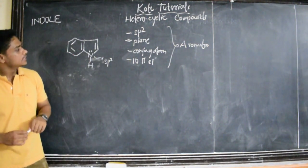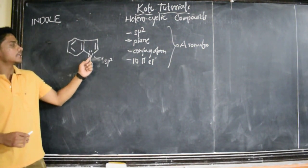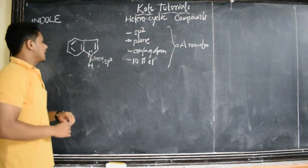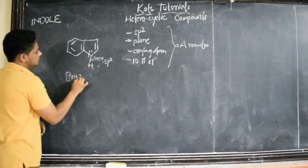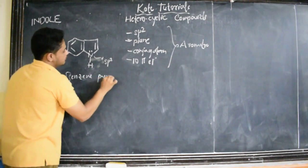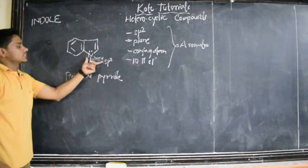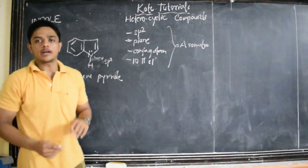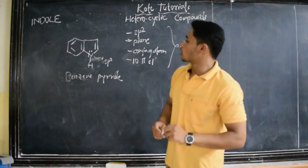One more thing: it is a heterocyclic compound because there is nitrogen, a hetero atom, present in the same ring. And also, it is called benzopyrrole, because indole consists of benzene as well as pyrrole ring. So it is benzopyrrole. That is the basic structure of indole.